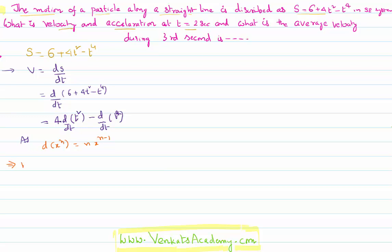Applying the formula, velocity v = 4 × (2t²⁻¹) − 4t⁴⁻¹, which simplifies to v = 8t − 4t³.